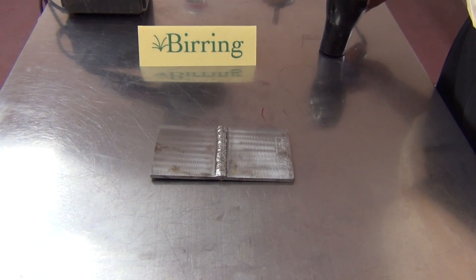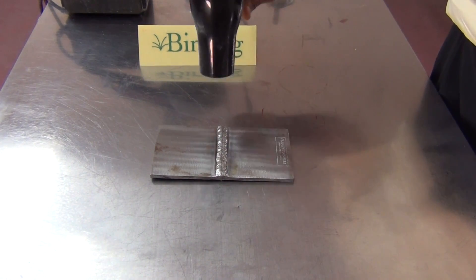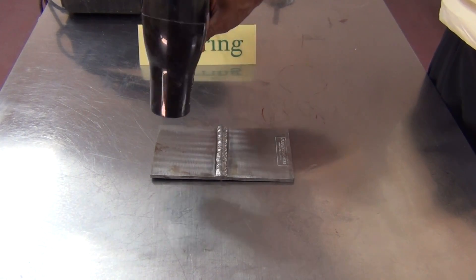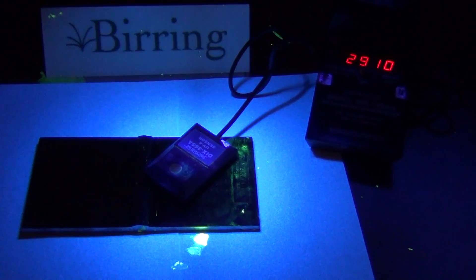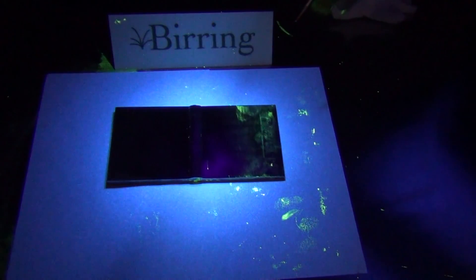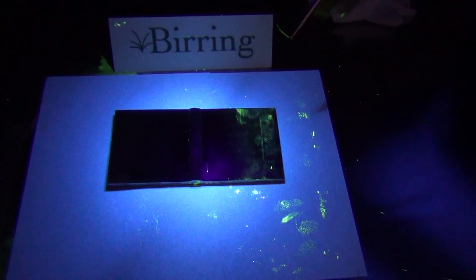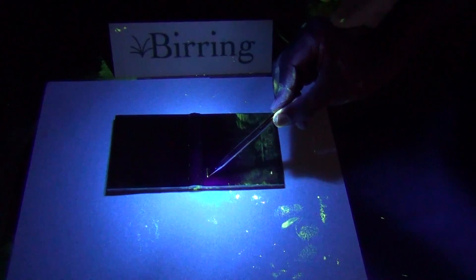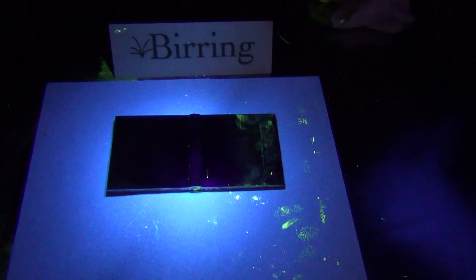Check the light level on the surface to be inspected - it should be more than 1000 microwatts per centimeter squared, and we read on the light meter it's well above 2000, so we are good to go. The sample is now ready for me to apply the developer. Even before I apply the developer, you can see one indication right here. I will now apply the developer.